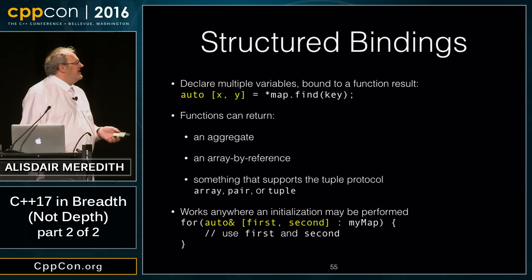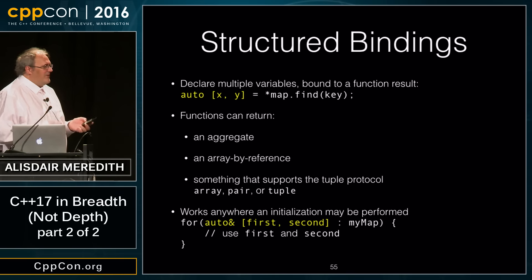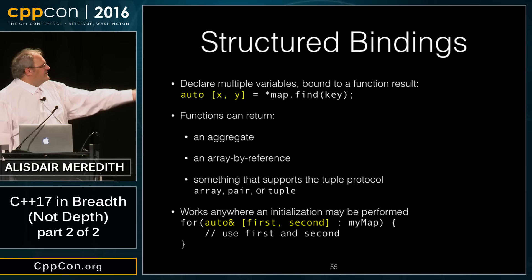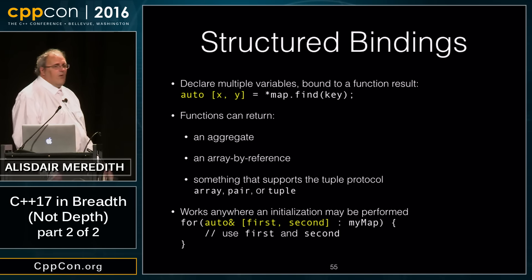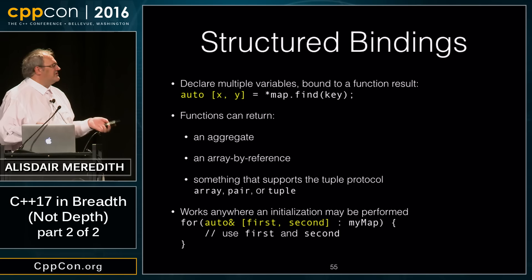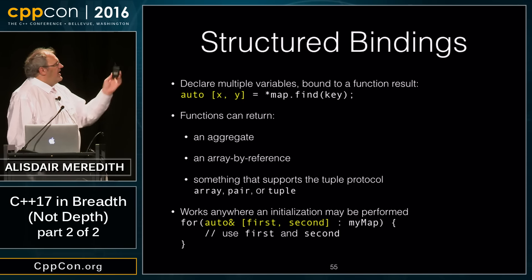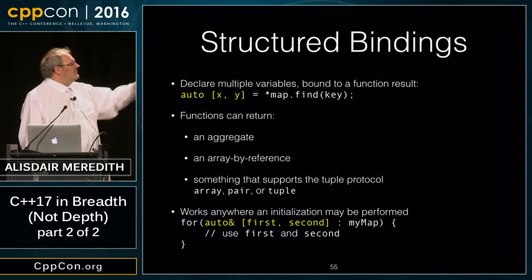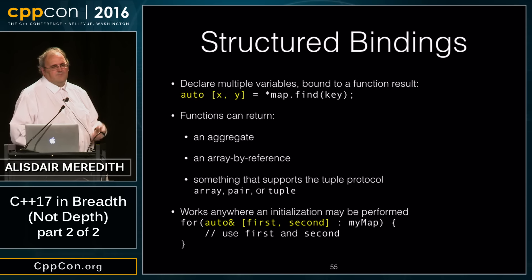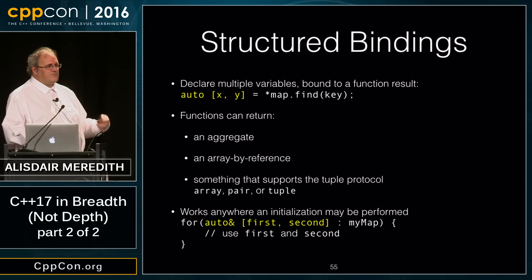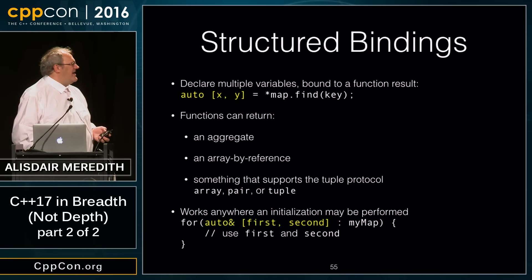The syntax is: using all our wonderful tokens, `auto [x, y]` introduces two new variables x and y, that will bind to the result of — in this case — dereferencing map.find, giving first and second of that pair.